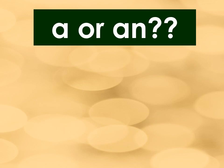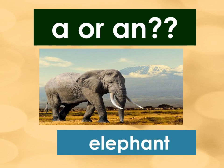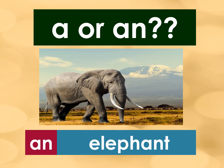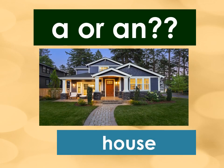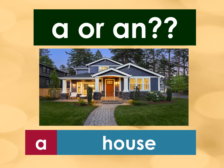Now, let us try this activity. Tell me if we should use the article A or the article AN. Let's begin. Elephant. We use the article AN when the word after it starts with a vowel letter. House. That's correct. It's A. House starts with a consonant letter H. We use the article A when the word after it starts with a consonant letter.